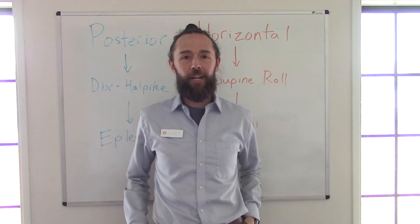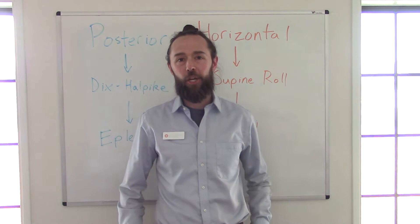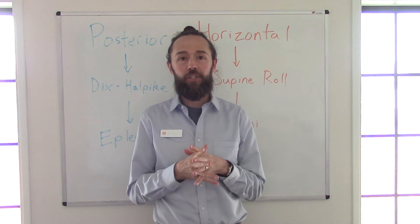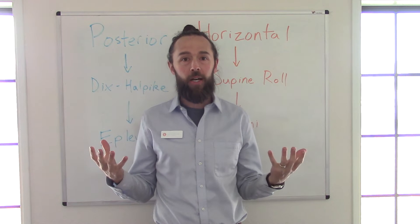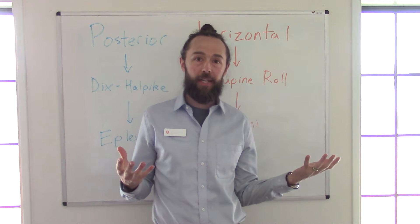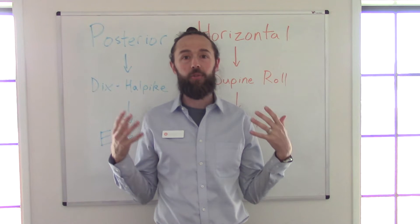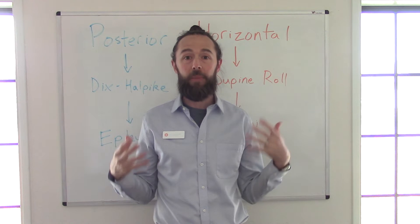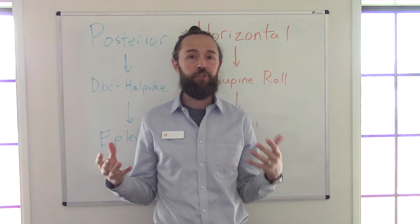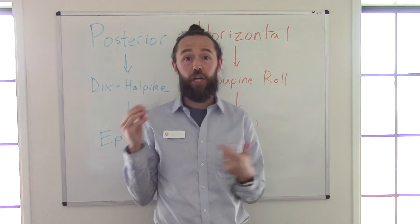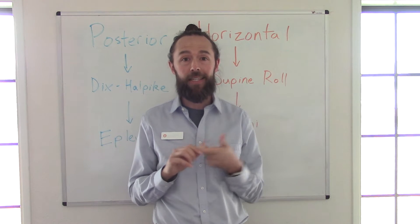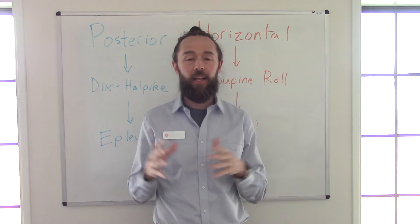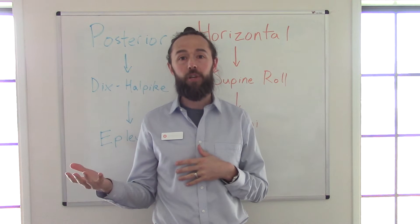Hey everybody, Luke Gordon here. In today's video we're going to talk about differentiating between the two types of vertigo: posterior canal and horizontal canal. If you've got vertigo and it's BPPV and you're trying to figure out the very first step — which canal is it in and which side is it on — that's your first step in treatment.